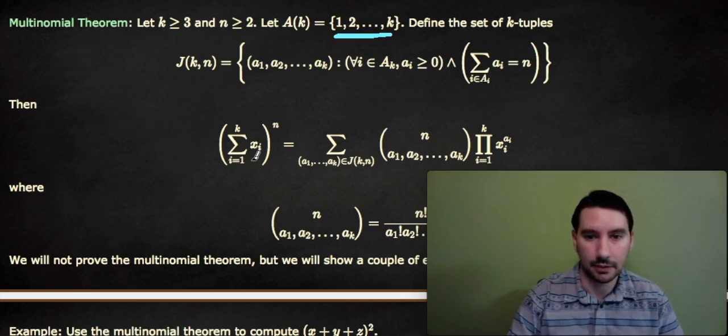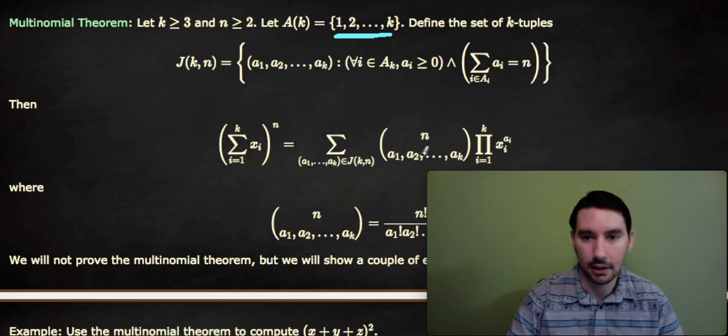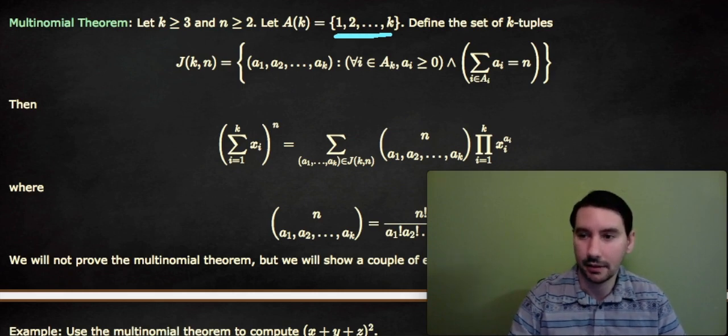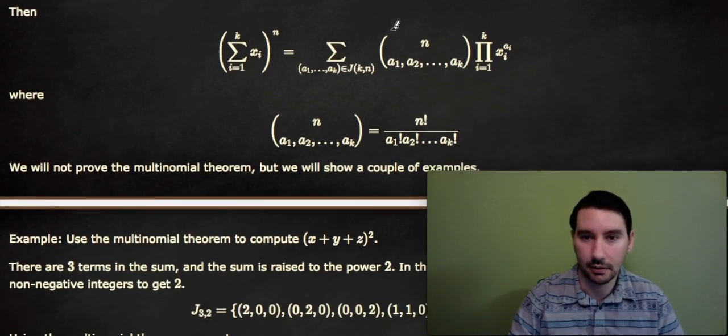Then, the sum from i equals 1 to k of x_i to the n is the sum over all tuples in J_kn of n choose (a₁, a₂, to a_k) times the product from i equals 1 to k of the x_i to the a_i. And we haven't even defined this choose with multiple terms. It just means to expand at multiple factorials. So this is n factorial over a₁ factorial, a₂ factorial, up to a_k factorial.